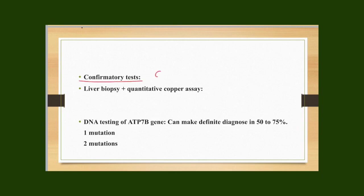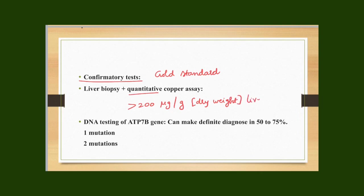The gold standard confirmatory test is liver biopsy with quantitative copper assay, which shows more than 200 micrograms per gram of dry-weight liver tissue — confirming the diagnosis of Wilson's disease. DNA testing can make a definitive diagnosis in 50 to 75% of high-risk patients such as first-degree relatives. If there is only one mutation, the person is a heterozygous carrier. If there are two mutations, it leads to the Wilson's disease state.